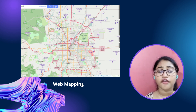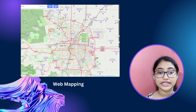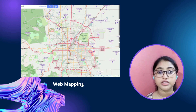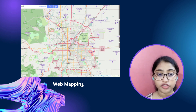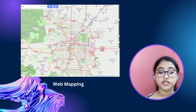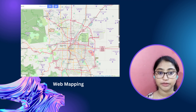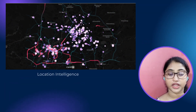For example, Google Maps is a popular example of web mapping services, which is used to provide directions, traffic information, street view as well as satellite imagery.